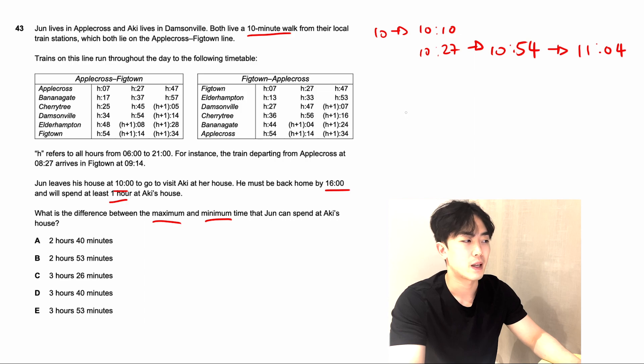Now let's look at what time Jun has to leave Aki's house to arrive home by 4. We have to work backwards. He has to arrive home by 4, meaning he has to be at Appercross station by 3:50, because it takes 10 minutes to walk home. Looking at this second table, we have to identify the latest time he can arrive at the station. 3:54 is too late, so it's going to be 3:14 or 3:34. We want to be as long as possible at her house, so we're going to choose the time where he arrives at 3:34 PM, meaning he has to get on the train at Damesonville at 3:07. If he's at Damesonville station at 3:07, plus his 10 minute walk from Aki's house, he has to leave Aki's house at 2:57 PM.